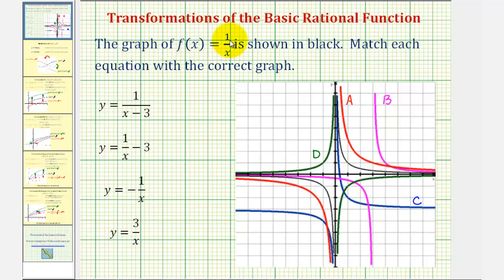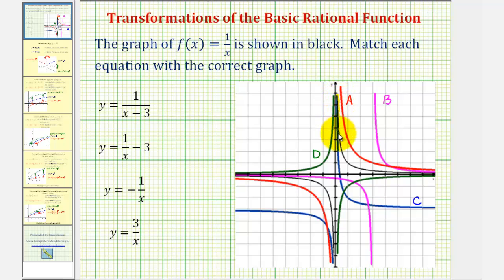The graph of f of x equals one divided by x, or y equals one divided by x, is shown in black on this graph here. We want to match each equation with the correct graph, also graphed on the same coordinate plane. The basic function f of x equals one divided by x is graphed in black, where one piece is in the first quadrant and the second piece is in the third quadrant.